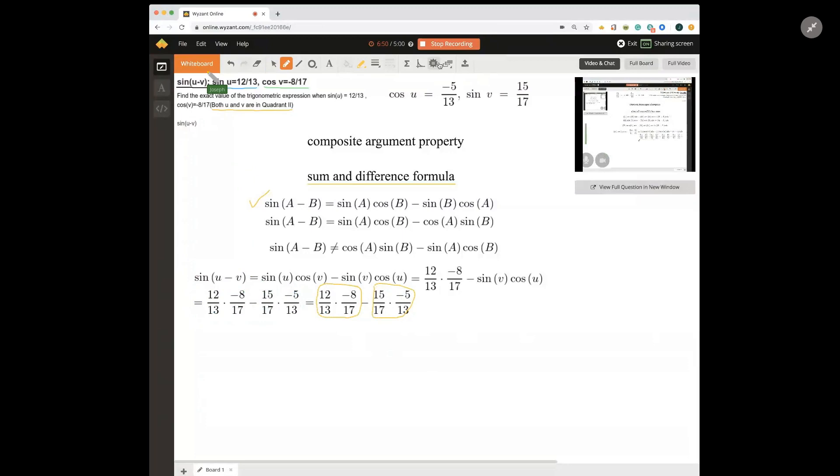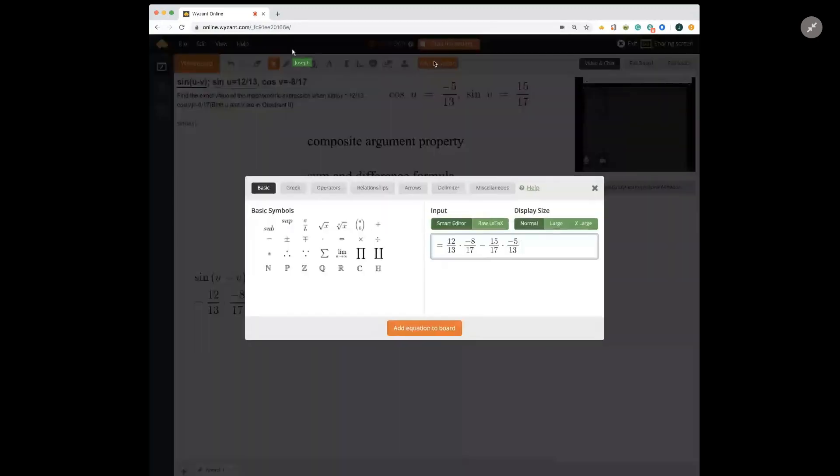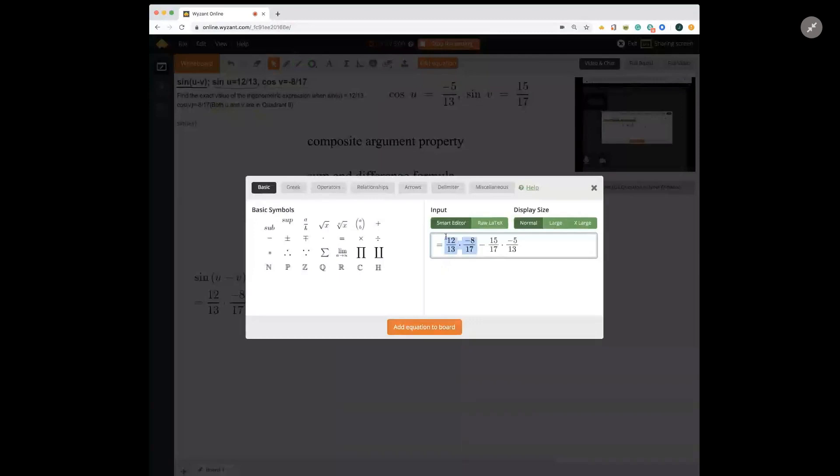And when we do so, what we get is negative 96 over 221. And negative 45 over 221.